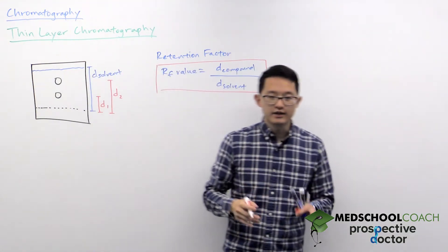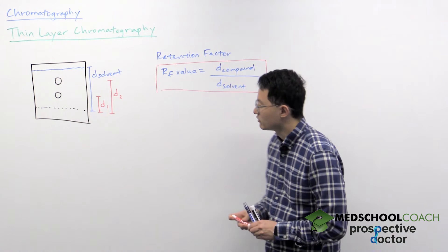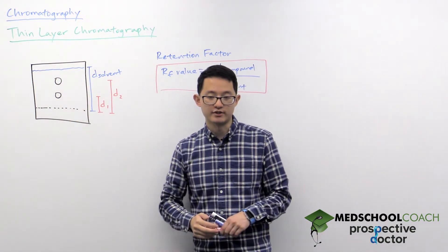And here, since you have two compounds in your mixture, that means you're able to calculate an RF value for each component in your mixture.